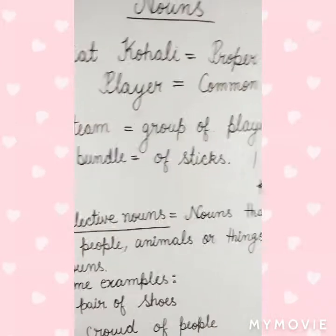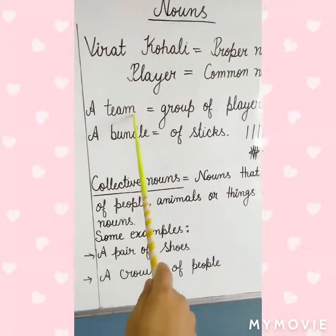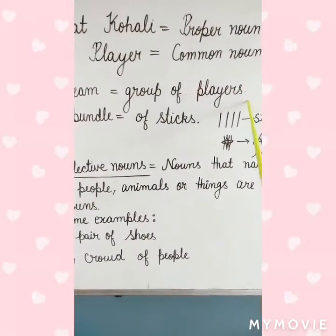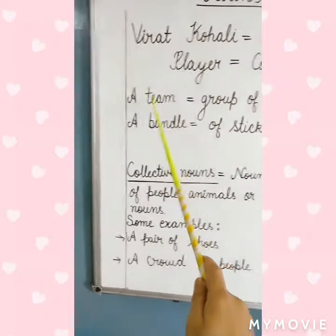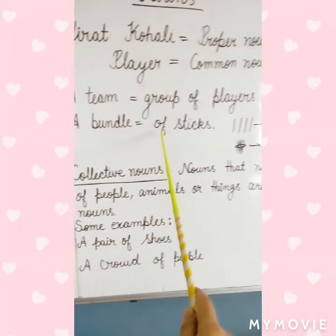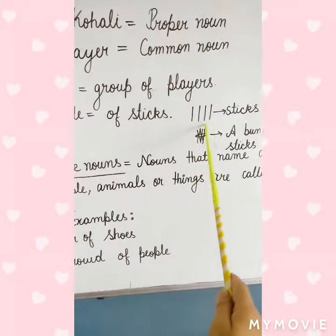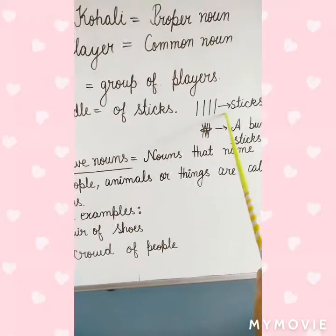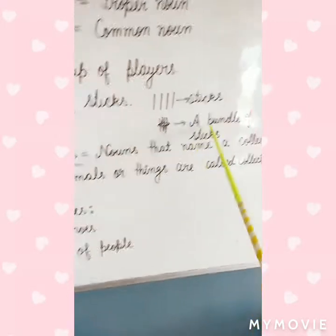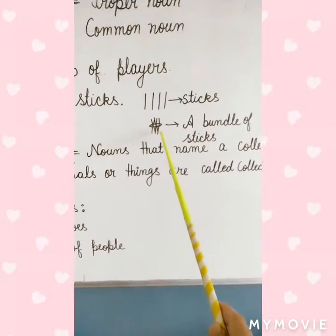In the same manner, a team is a group of players. A bundle of sticks — these are sticks, one, two, three, four sticks. When I make it a bundle, it is a collection of sticks.